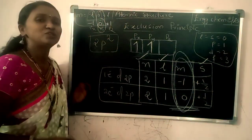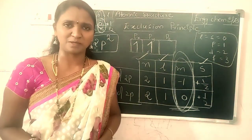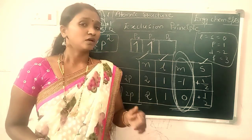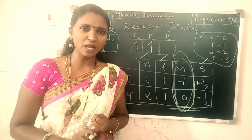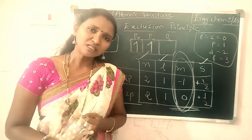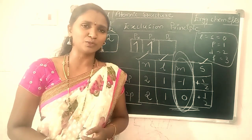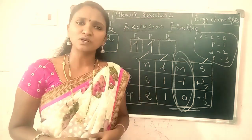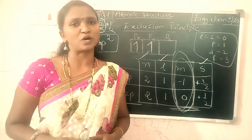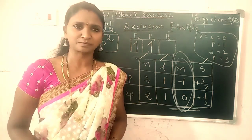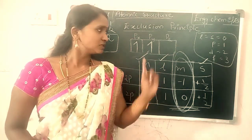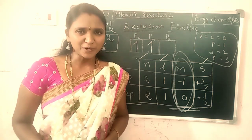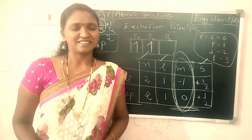So this is Pauli's Exclusion Principle. The Aufbau Principle, Hund's rule, and Pauli's Exclusion Principle are all used to explain how the arrangement of electrons takes place into orbitals. I hope you understand. Thank you.